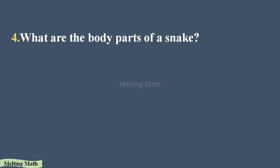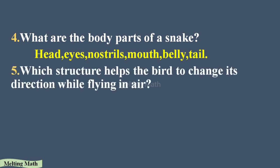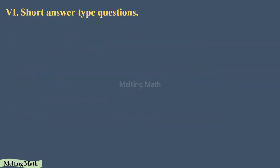Very short answer question four: what are the body parts of a snake? They are head, eyes, nostrils, mouth, belly, and tail. Question five: which structure helps the bird to change its direction while flying in the air? The answer is the tail. The tail of the bird helps it change direction while flying in the air.